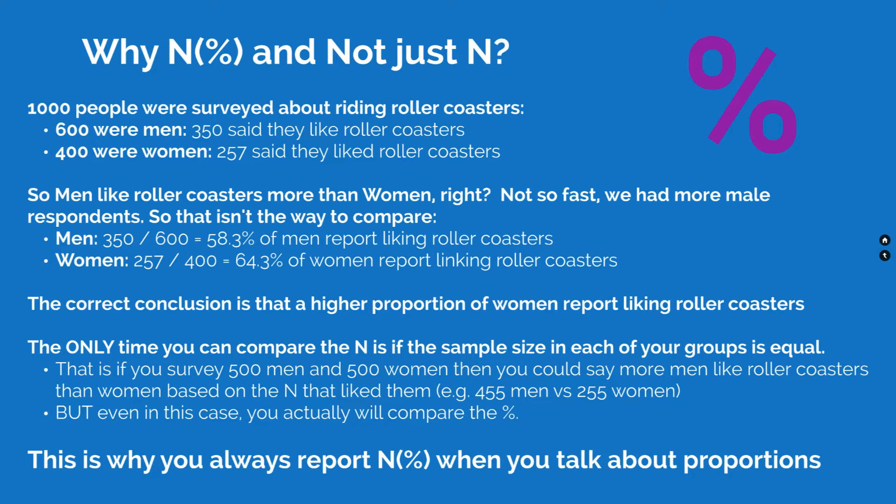The only time you directly compare counts is if the number in each category that responded is equal — for example, 500 women and 500 men. But even then, you'd still report percentages. We are accustomed to percentages in life: 50% of this, 25% of that, one third of these. Always report the n and the percent. The percent allows you to compare groups from different overall sample sizes, and the n tells you how much evidence you have — whether you only have 2 responses or 2,000.